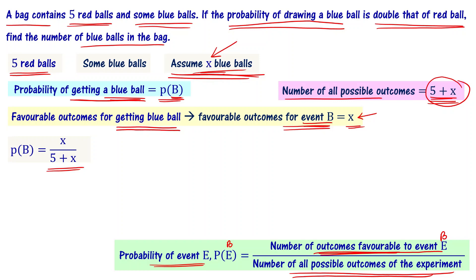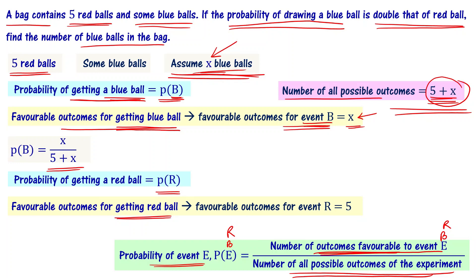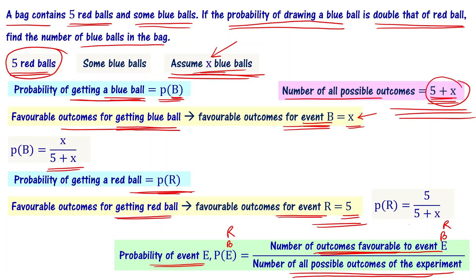Similarly for the red colored ball, the probability of getting a red colored ball P(R) equals the number of outcomes favorable to event R divided by the number of all possible outcomes. All possible outcomes are 5 plus x. The outcomes favorable to event R — getting a red colored ball — equals 5, since there are five red colored balls. So P(R) equals 5 divided by 5 plus x.